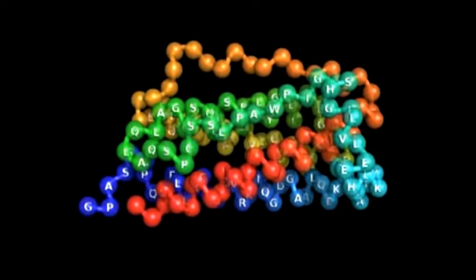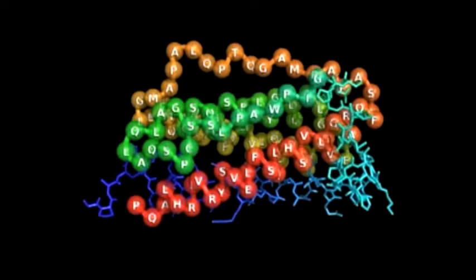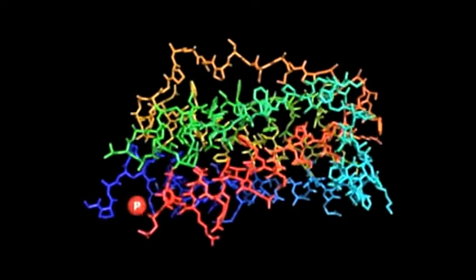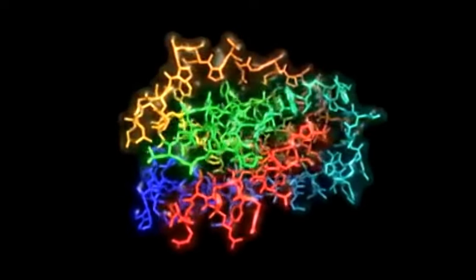Here is the one-letter amino acid code revealing the identity of each amino acid. Again, now you see the amino acids drawn to show the position of each atom. This is like looking at an atomic skeleton of each amino acid.